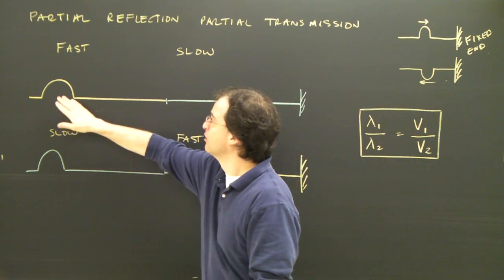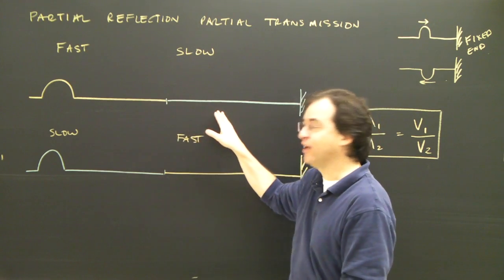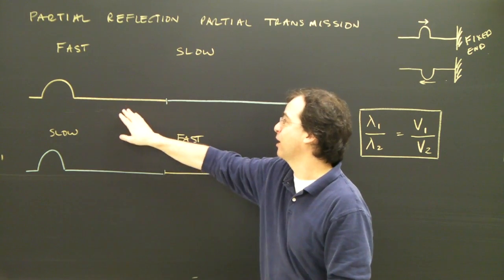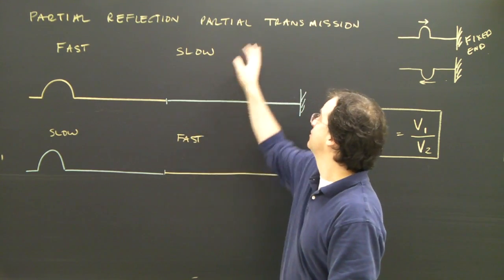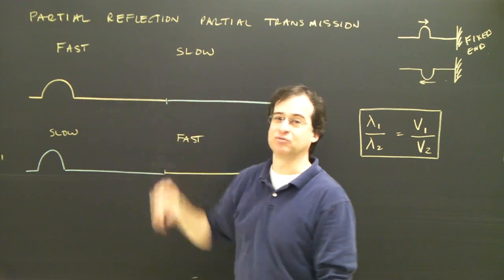When a wave crosses from one material into another, most of the wave may go into that material, but some of the wave is reflected. And what we want to look at is what happens to the wave when it goes in there? That's the transmission. And what happens to the reflected portion? That's the partial reflection.